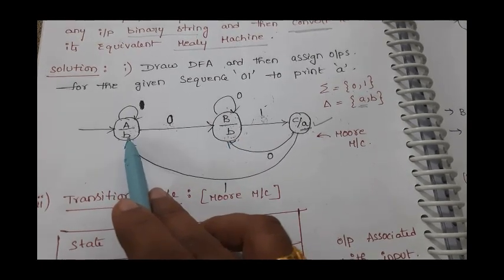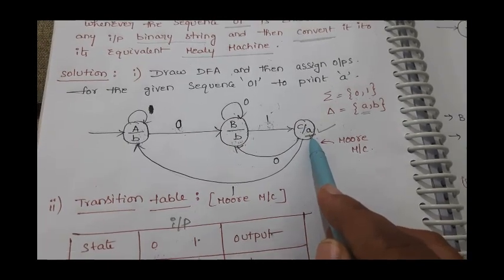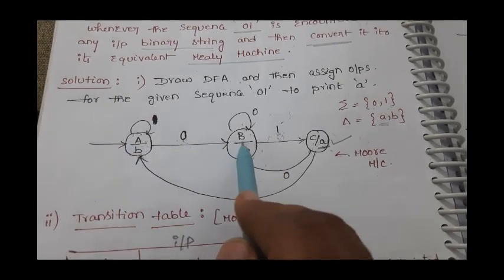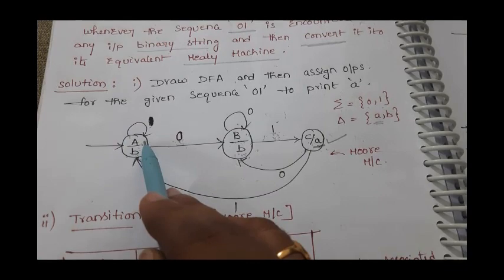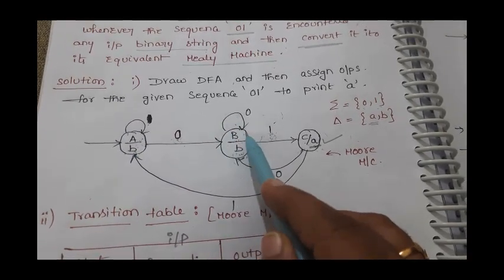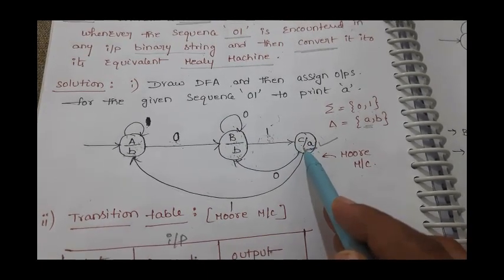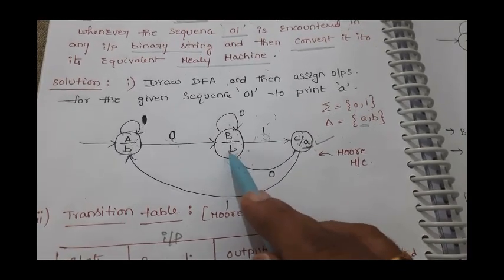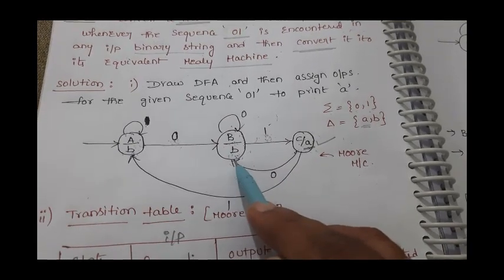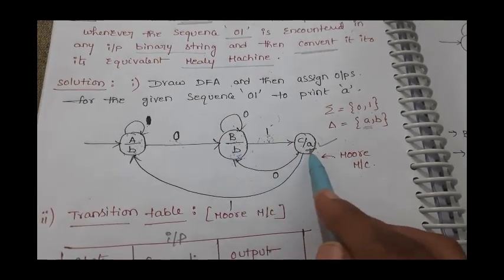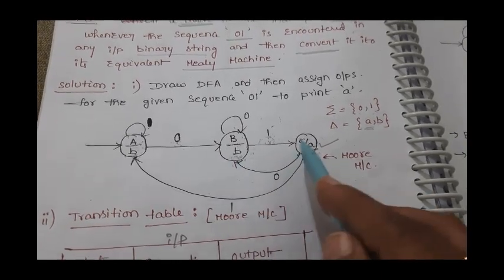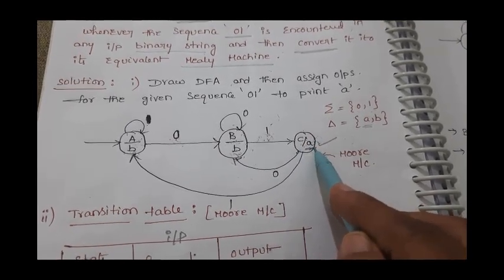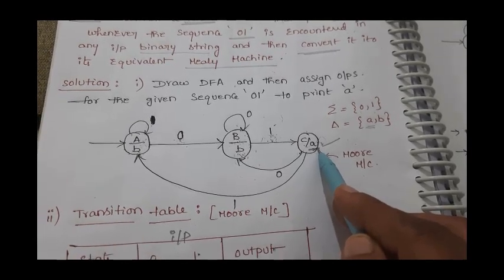State a with input 0 goes to b; with input 1 it stays in self state, with output 'b'. State b with input 0 stays in self state. For state c: if input is 0, it goes to b — because after a 0 there may be a chance of getting 1, and if 1 follows then we need to print 'a'. If we keep c as a self-state on 0 input it would incorrectly print 'a', but 'a' should only be printed when 0-1 occurs.